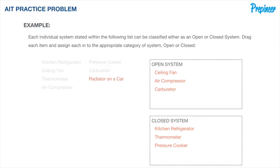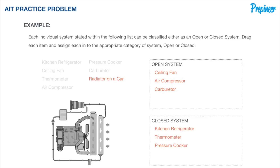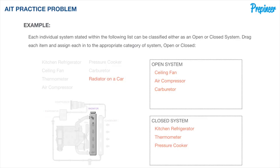Finally, we have a radiator on a car. Here is the typical cooling system in a vehicle with several components, but we are only concerned with the radiator and its system boundary. Hot coolant is cycled from the inlet through the radiator tubes, dispersing at the outlet at a cooler temperature. Heat energy is extracted by air flowing over the outer surface of the radiator tubes. With transfer of both matter and energy, it is an open system.